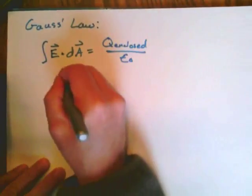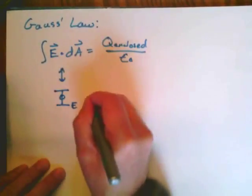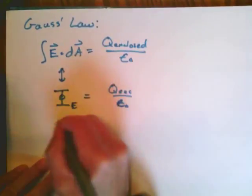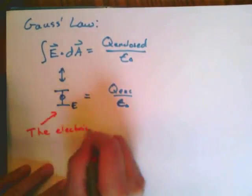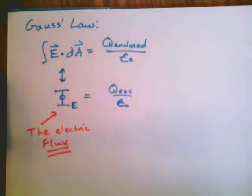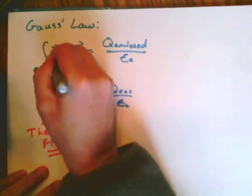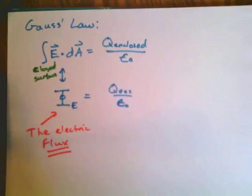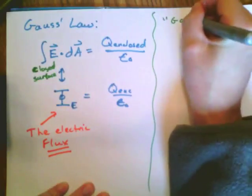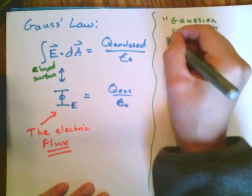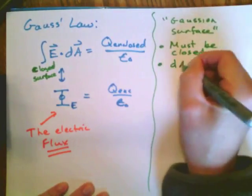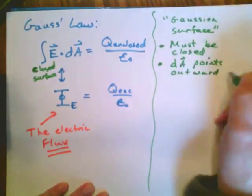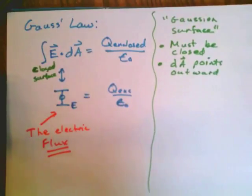The term E dot dA on the left side is what we call the electric flux, often written with capital Phi. When you see that left-side integral, you should think 'electric flux' — not the integral over E dA, just the electric flux. It's a flux through a closed surface, called a Gaussian surface. The Gaussian surface must be closed, and we define the area vector pointing perpendicular to the surface, outward.